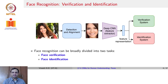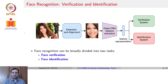The entire space of face recognition can broadly be divided into two kinds of tasks required from an application standpoint: verification and identification. In both cases, it is generally the last stage of the architecture that changes. You have an image, you perform detection and alignment, get a cropped well-aligned image, take a deep CNN feature extraction network, get a feature representation, which is then passed on to a verification system or an identification system.